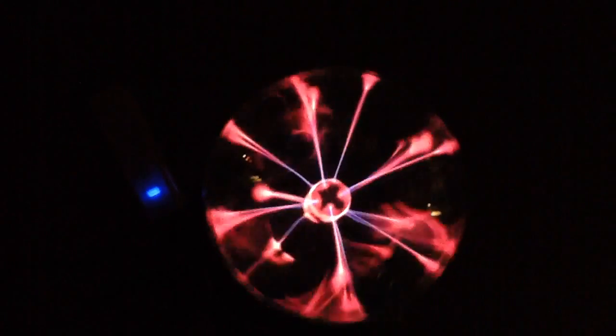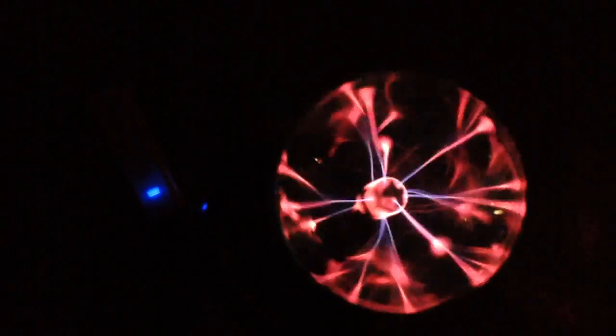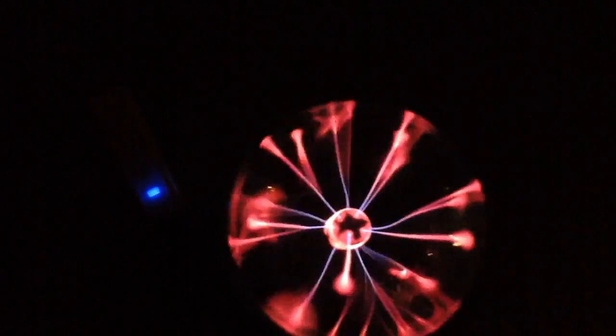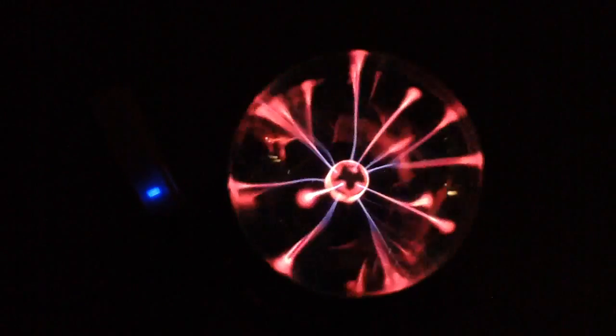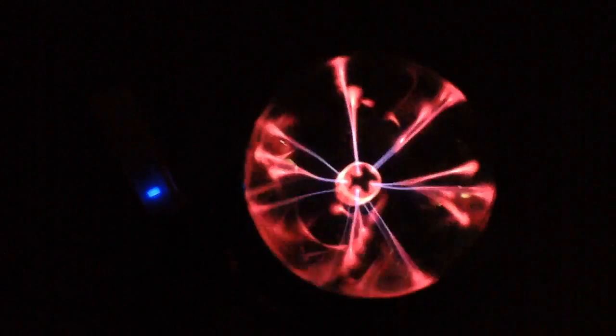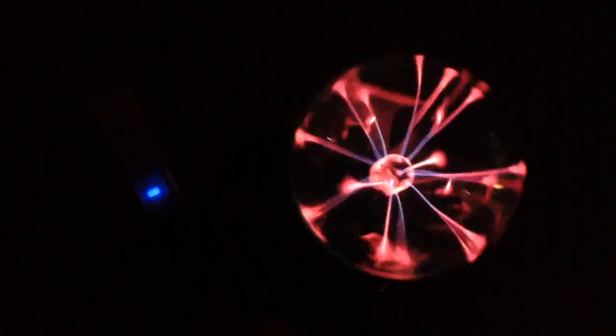A USB powered plasma ball. This has got a quite small globe, only about 3 inches diameter, which is about 75 millimeters. But it's actually surprisingly bright given that this is running on 5 volts at between about 300 to 400 milliamps. It's sort of 300 milliamps in its idle state, and then when you put your hand on it to give it a better reference to ground, it goes up to about 400 milliamps and increases in brightness as that streamer goes to your finger.